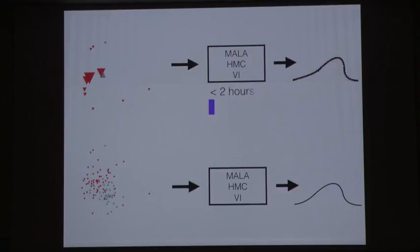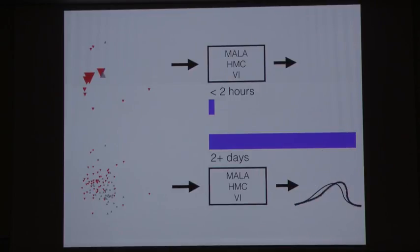And then we can just run our algorithm quickly. So just to kind of give the scale here, for some of the datasets we looked at, it might take less than two hours to run 10,000 iterations of HMC on the coreset, whereas it might take over two days for the full dataset. But hopefully the inferences that we get are quite similar.